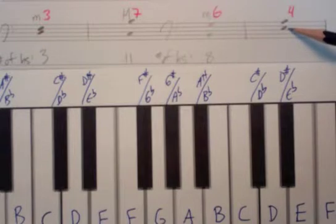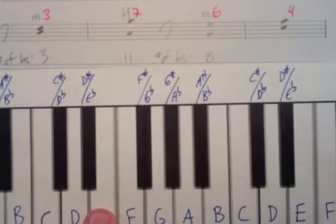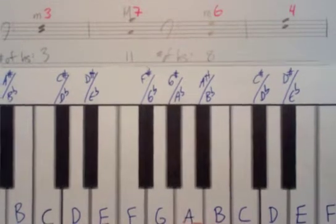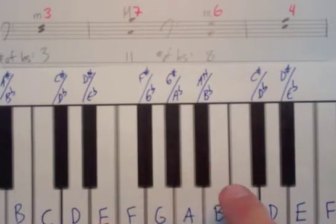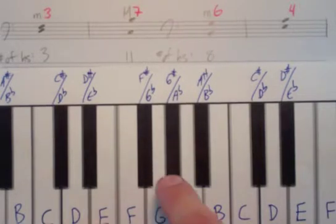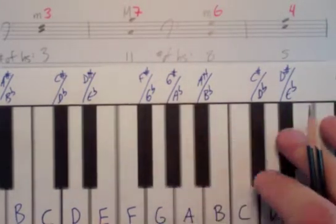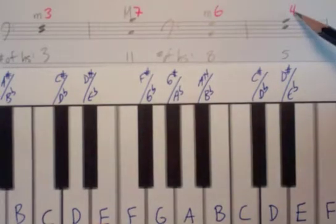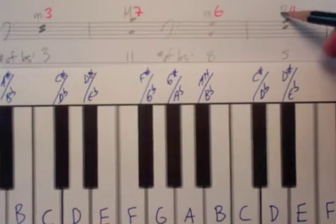Next, going from E to A. We pick E on the piano right here, going to A right here. Counting up half steps — one, two, three, four, five, six. Wait, let me do that again: one, two, three, four, five. So five half steps. We have a generic interval of a fourth — vertical column of a fourth, horizontal of five half steps — which gives us a perfect fourth.